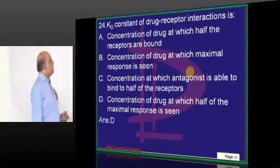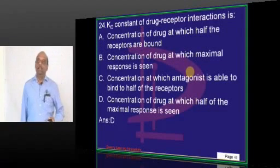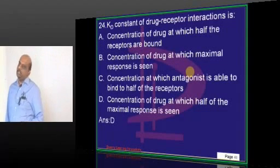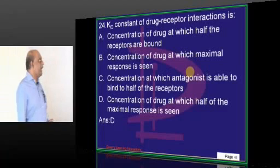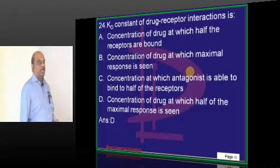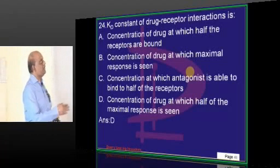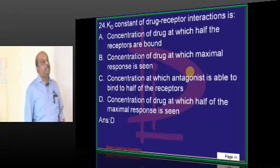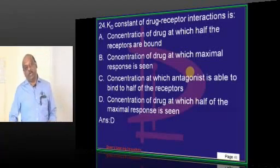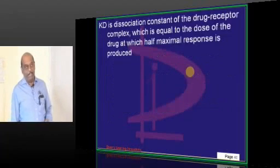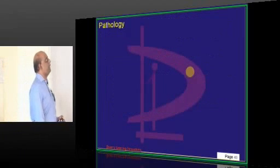The Kd constant is the concentration of the drug at which half the maximal response is typically seen — that is basically called Kd and is what you need to remember.